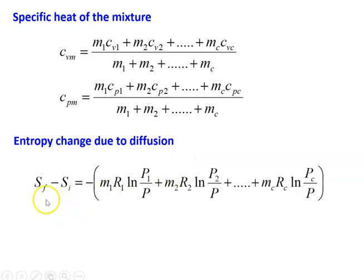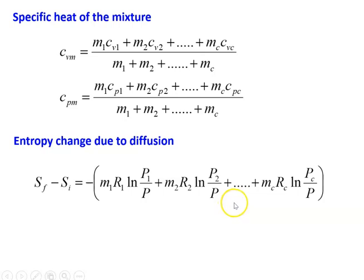The entropy change due to diffusion is: Sf − Si = −(M1·R1·ln(P1/P) + M2·R2·ln(P2/P) + ... + Mc·Rc·ln(Pc/P)). The gas constituents inside the mixture move from one place to another, and because of this movement of gas components there will be a change in entropy — that is called entropy change due to diffusion.